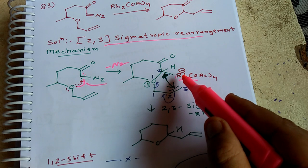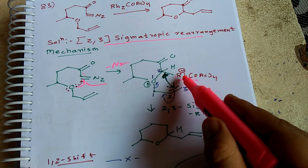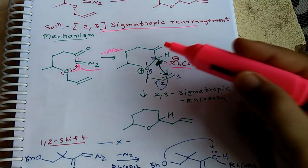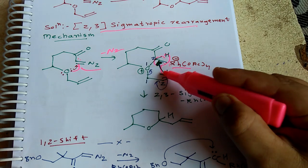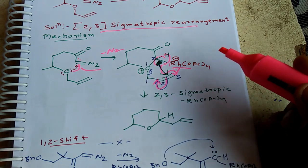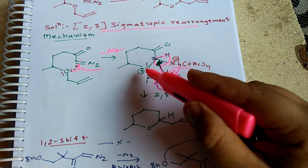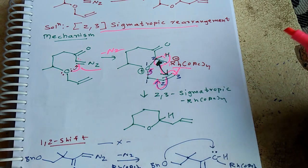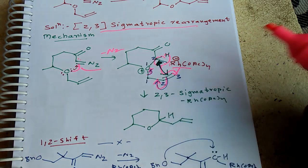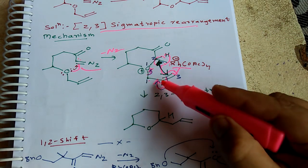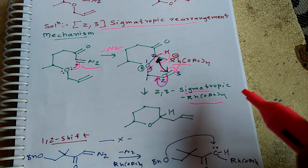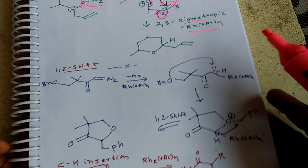This negative charge attacks, and the double bond migrates to this position. The oxygen carrying the positive charge is stabilized by the bonding pair of electrons. Numbering the electrons: this is one, this is two — and at the allylic position we number one, two, three — so this is a 2,3-sigmatropic reaction. Rhodium acetate leaves and we get the product.